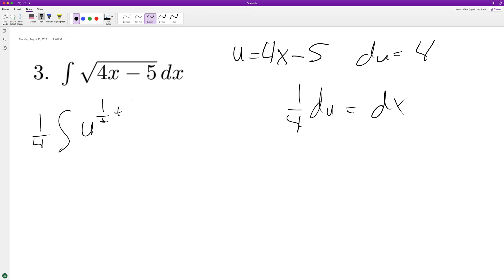We have u raised to the 1/2, plus 1. So this ends up being divided by 3/2. So we have 1/4 times 2/3, u raised to the 3/2.